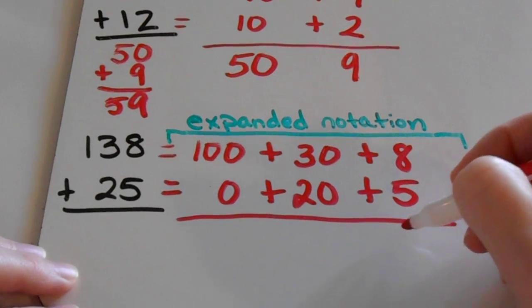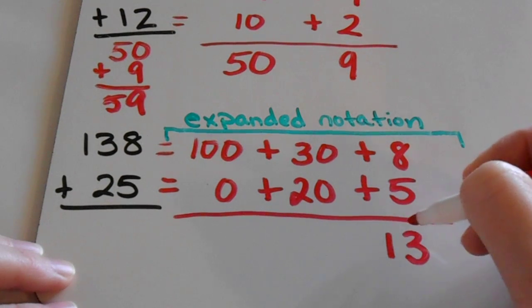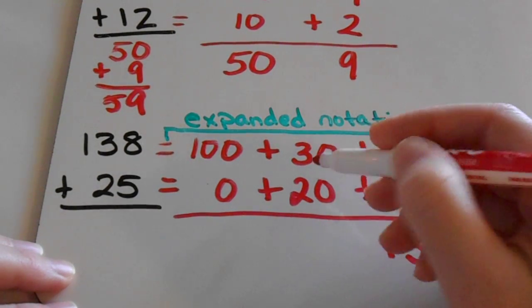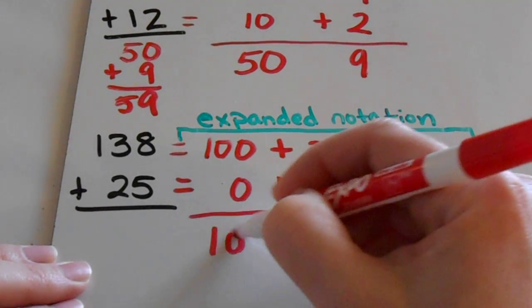Now I'm going to add all those parts up. 8 plus 5 is 13. I'm just going to write that number down here. Even though it's a two digit number, it's okay to go ahead and write the whole number down here at the bottom. 30 plus 20 is 50. And then 100 plus nothing is 100.